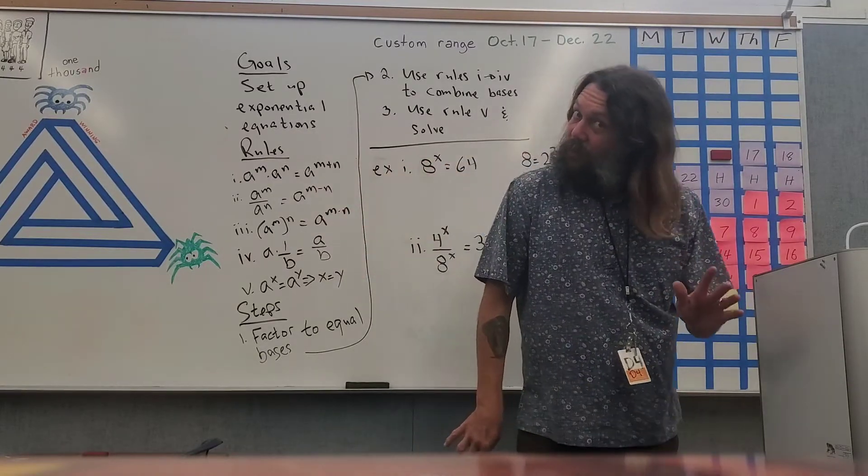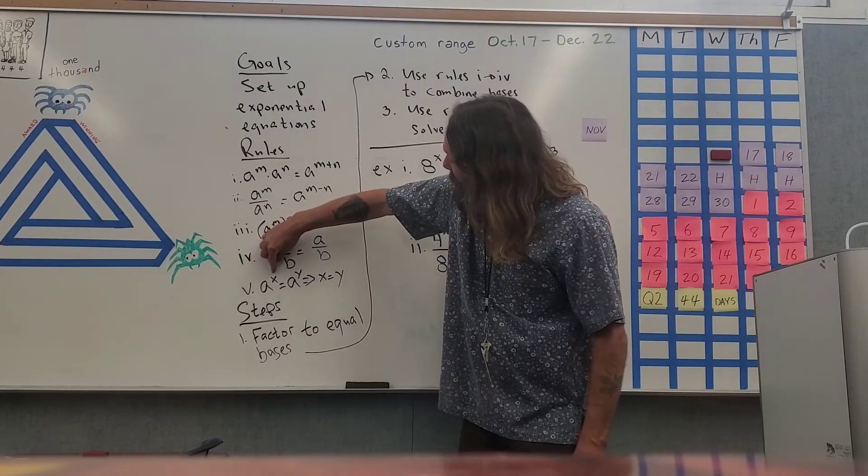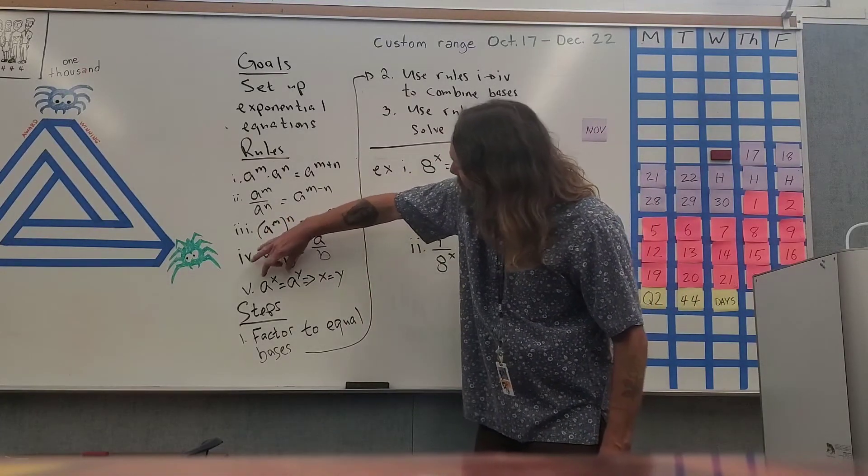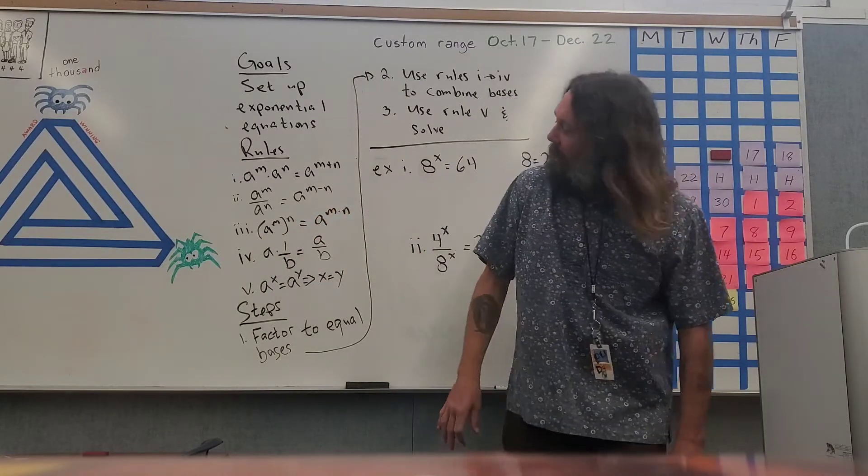Our fifth rule, which we're going to use to solve the exponential equations, is going to be a to the power x equals a to the power y. Here I have equal bases, so what that means is my exponents must be equal.